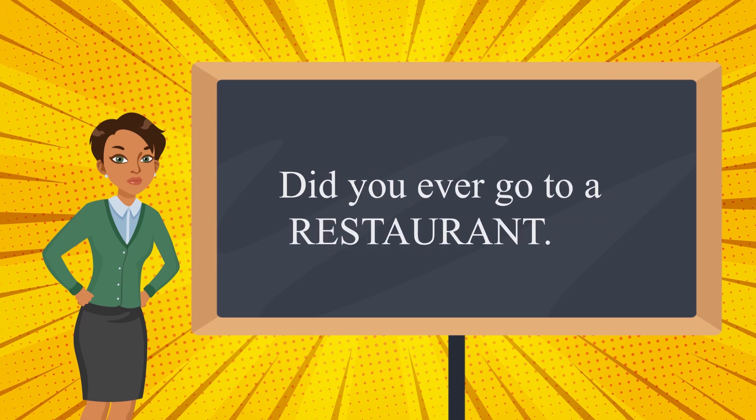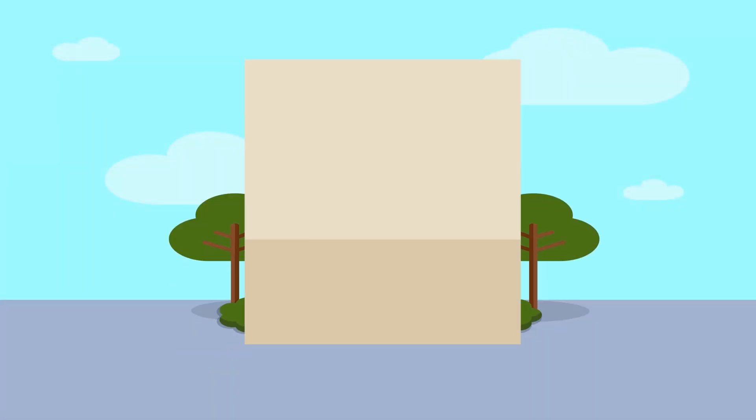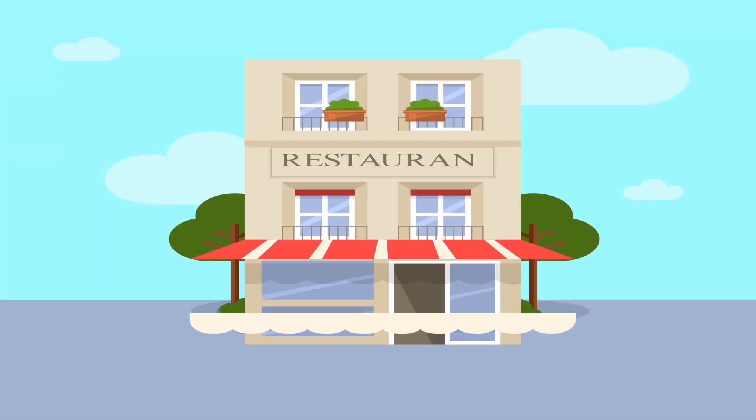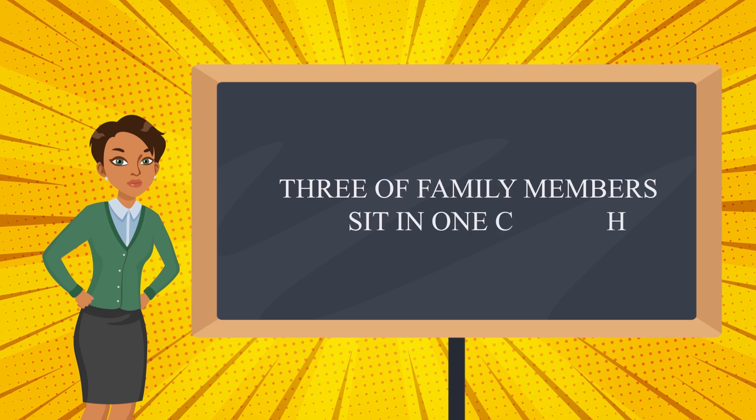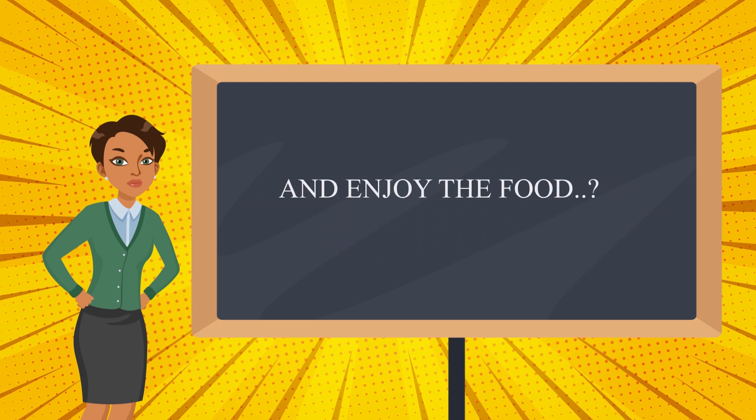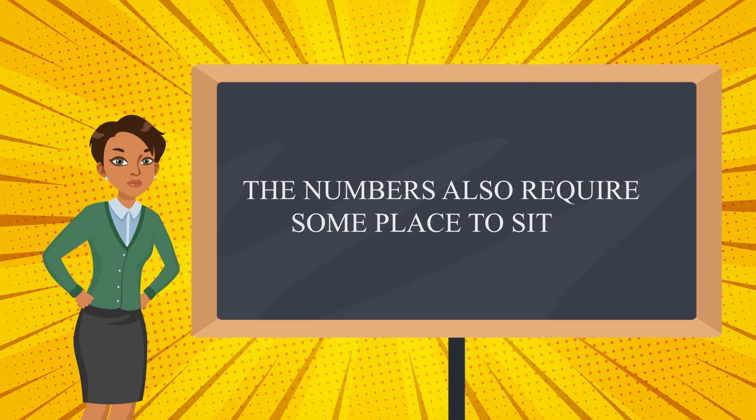Did you ever go to a restaurant? Yes, right? As soon as you enter the restaurant, what would you look for? You would look for some place to sit, right? Can three of your family members sit in one chair and enjoy the food? Absolutely no. In the same way, the numbers also require some place to sit.